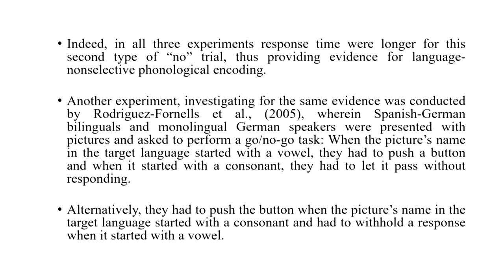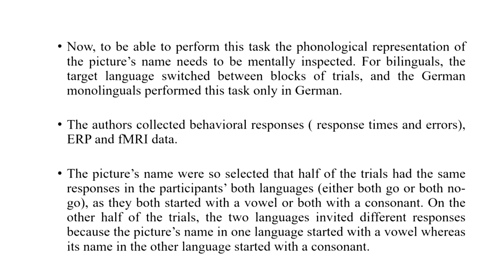In the go/no-go task, when the picture's name contained a particular vowel participants had to push a button — the go response — and if it started with a consonant they had to let it pass without pressing the button — the no-go response. Alternatively, they had to push the button when the picture's name in the target language started with a consonant and withhold a response when it started with a vowel in the non-target language. To perform this task, the phonological representation of the picture's name needs to be mentally inspected. For bilinguals the target language switched between blocks of trials — sometimes Spanish, sometimes German — although for German monolinguals the task was only in German.